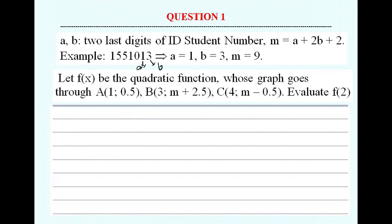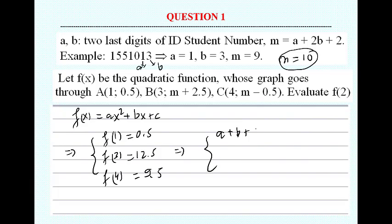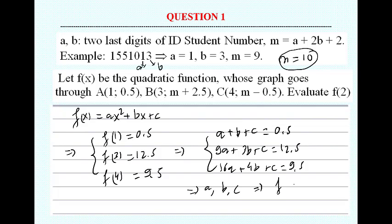Now the first question is easy — you know it from the training test. The next question is the quadratic function. You have m equal to as-squared plus b plus c, and you have conditions: F1, F3 equals 12.5, F4 equals A19. So you have the system: A plus B plus C, 9A plus 3B plus C, and 16A plus 4B plus C.